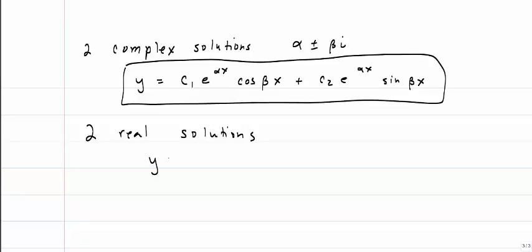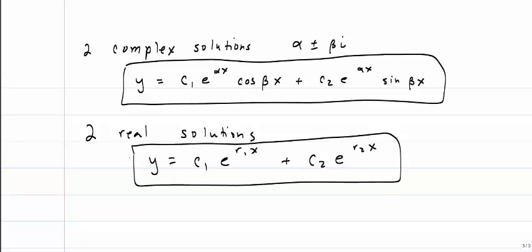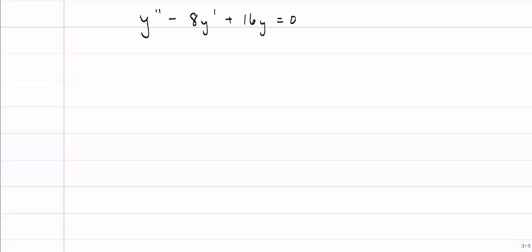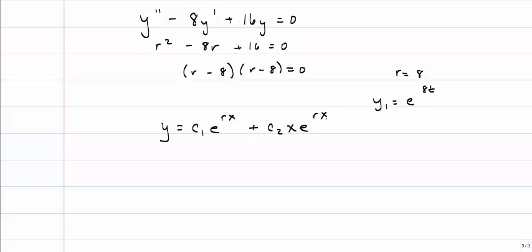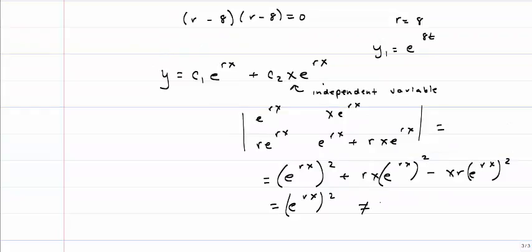Just as a reminder, when we had two real solutions, this was the form. Now the only thing we have to worry about is what happens if we get a repeated solution. If we have a differential equation such as this, what would happen if we took the characteristic equation and factored it? We would find that we had a solution of r equals 8, but that just gives us y1. We need a second solution. So what I'm going to tell you is, if we have a repeated root, then the general solution is c1 e to the rx plus c2 times x times e to the rx. That is, we're going to throw in an extra independent variable. Let's double check to make sure these are in fact linearly independent. When I take the Wronskian, we find that this is equal to e^(16x), which is not equal to 0.